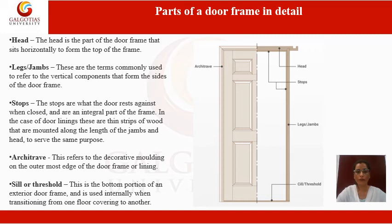In the case of double lining, thin strips of wood are mounted along the length of the jamb and the head to serve the same purpose as stops.